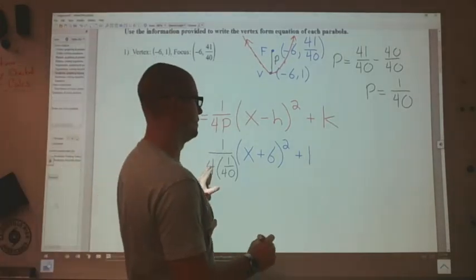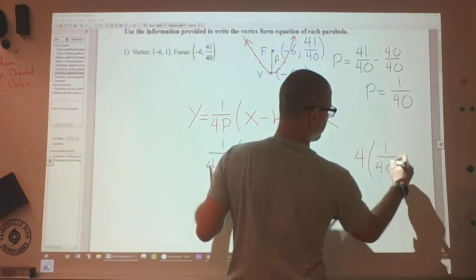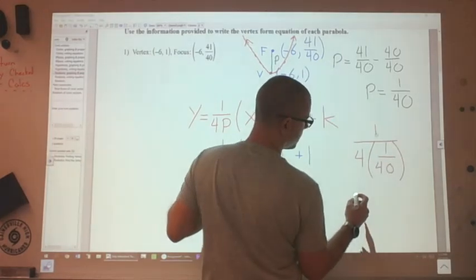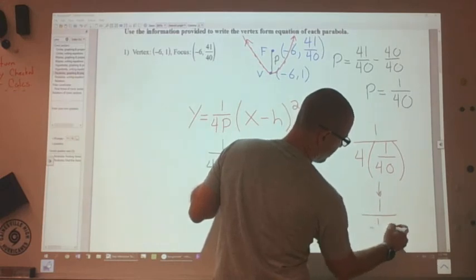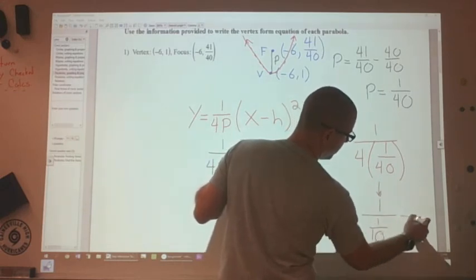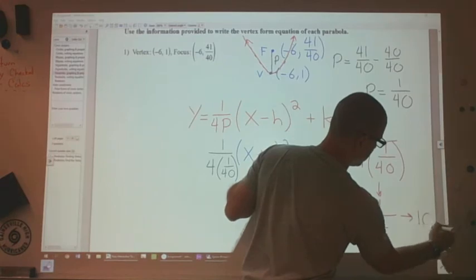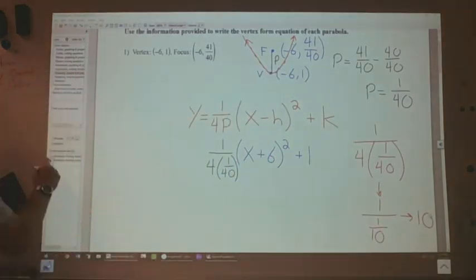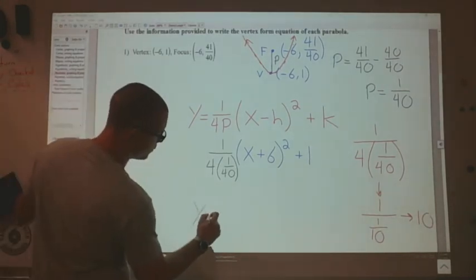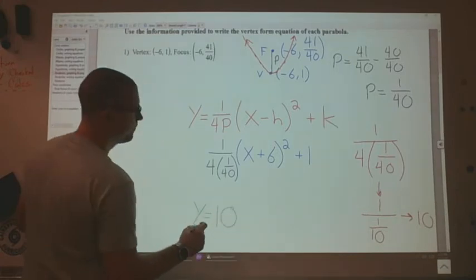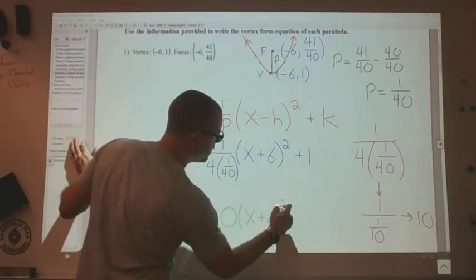So we'll do that over here. 4 times 1 over 40 over 1. It's going to be 1 over 1/10, which keep change flip. So I would take the reciprocal of this, I would flip it and multiply to the top. That would just be 10. So my final equation here is going to be y equals 10, x plus 6 squared plus 1.